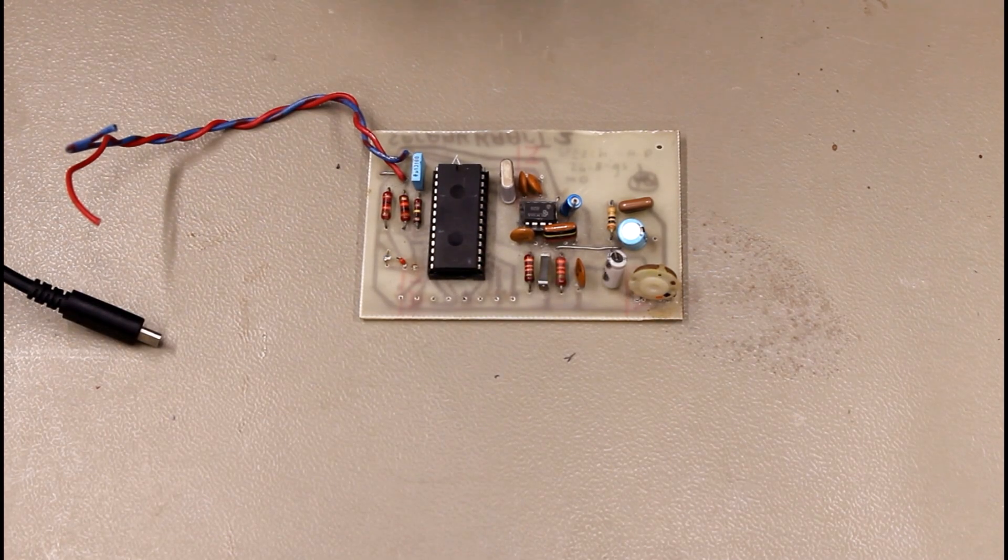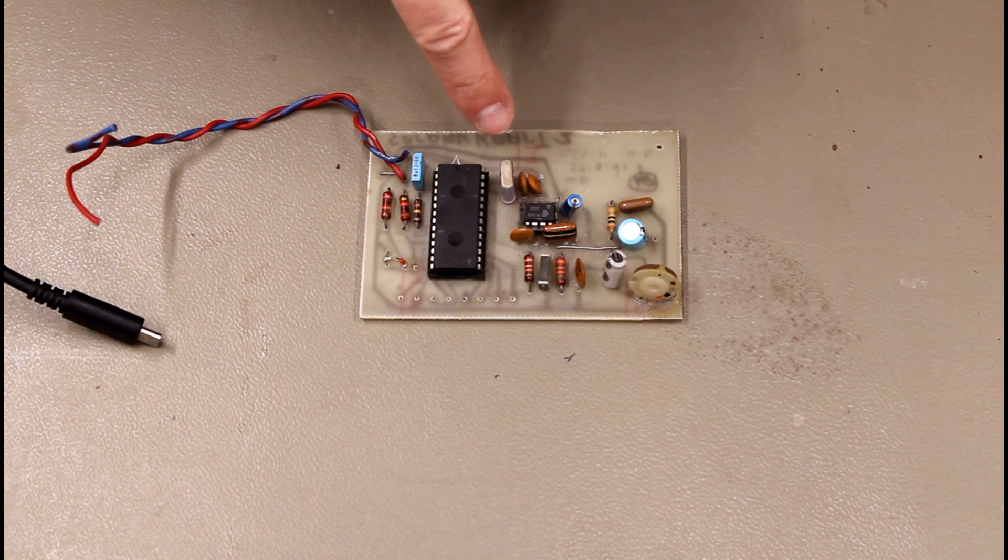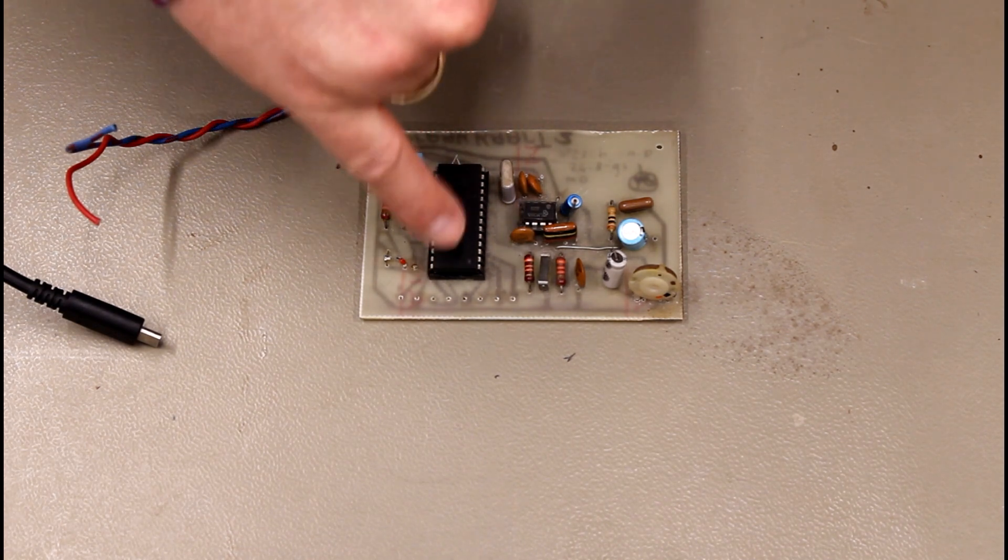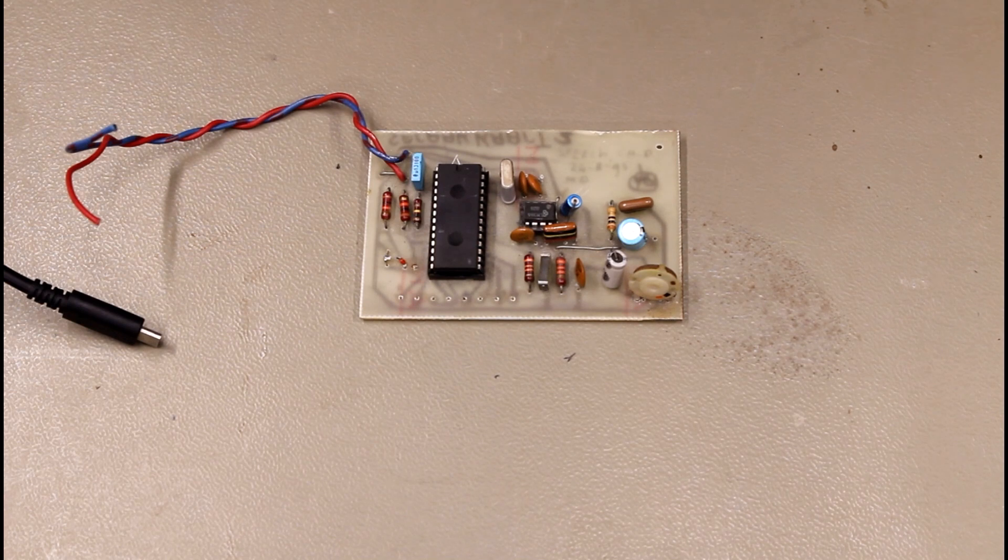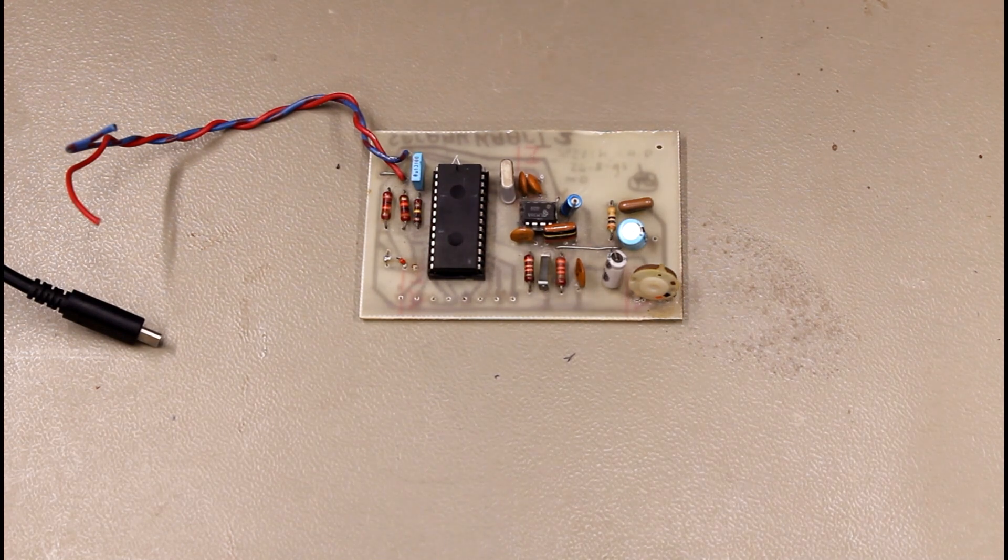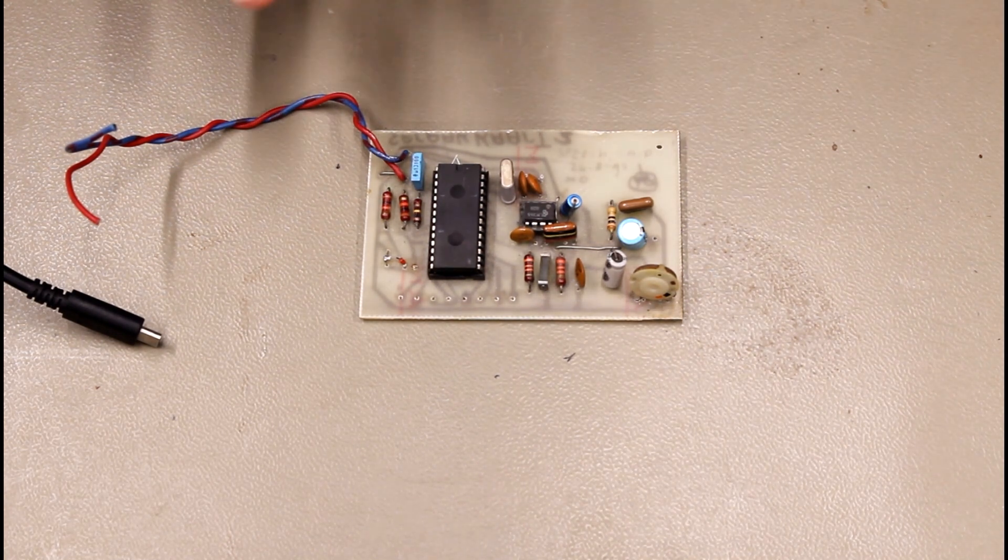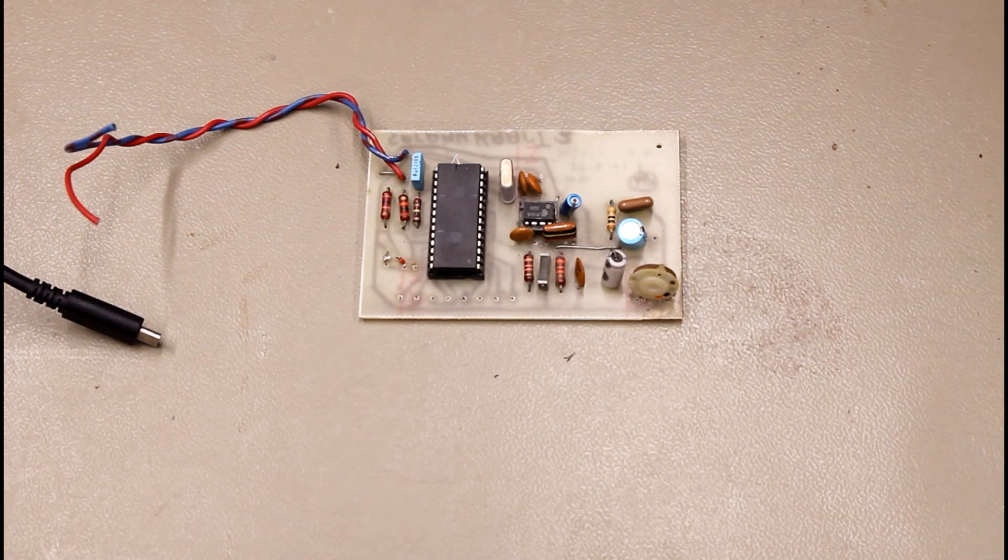So this is the actual PCB from 40 years ago. There's an oscillator, a crystal, a chip, and of course a small audio amplifier. As you can see, it holds a lot of old components. Probably those electrolytic capacitors are dried up completely after so many years of just doing nothing. So I'm not even going to bother with this. I'm going to set it aside.